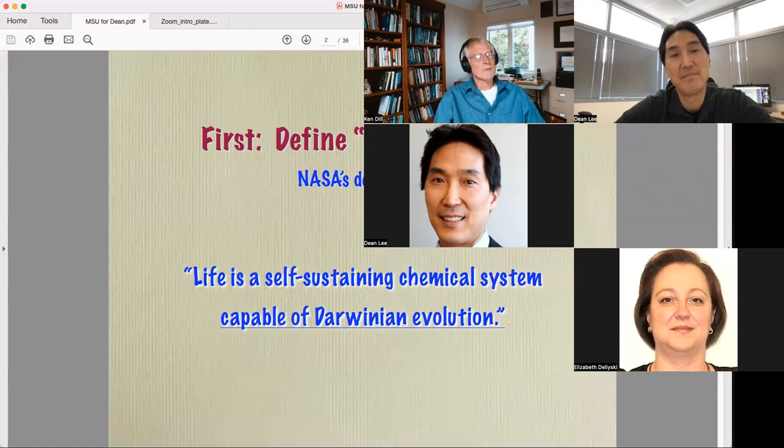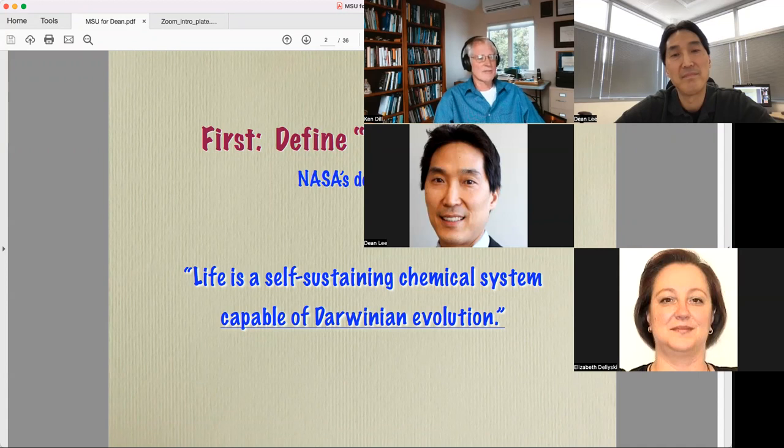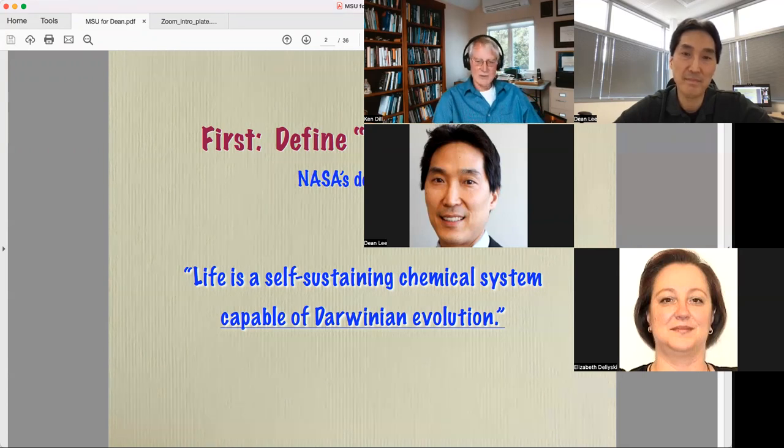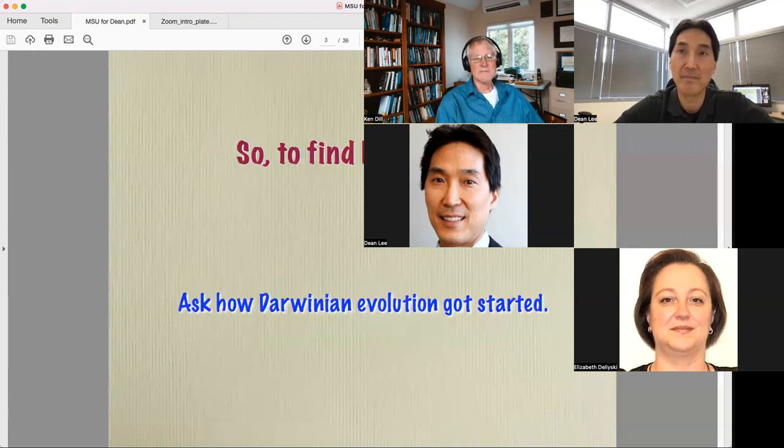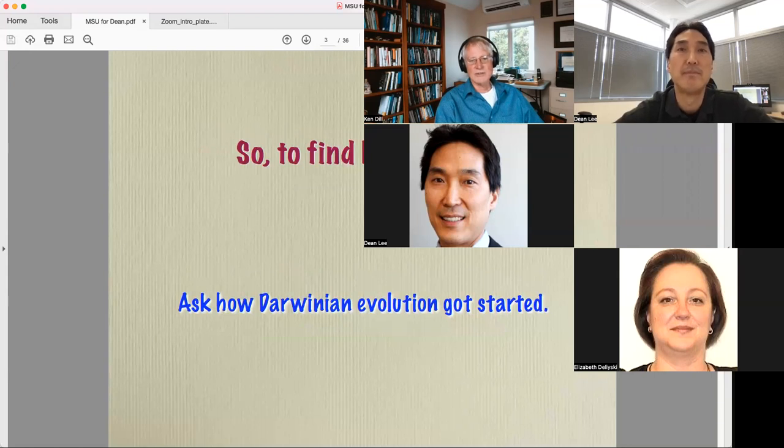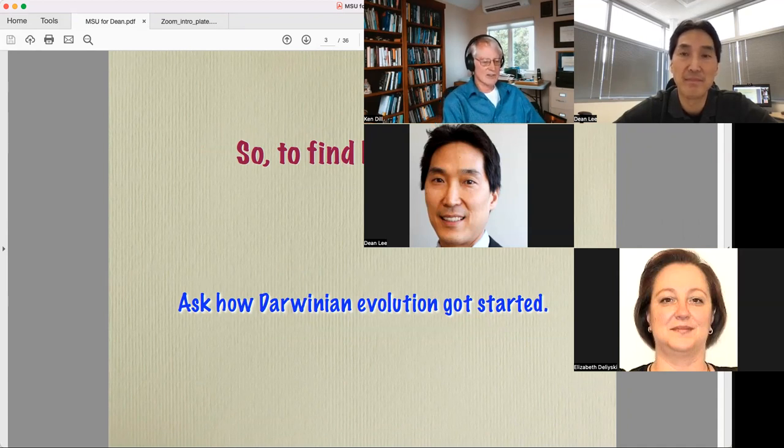But the second point is that this gives us some clues about how to think about the origins of life. This definition tells us that what we should be looking for is the dynamical propagation process itself. I need to be able to tell you something about how molecules came to propagate dynamically in Darwinian ways, adaptive ways, in autocatalytic ways, before I can tell you anything else about the forms of matter that it entailed. In short, to find the origin of life, what we have to do is ask first how Darwinian evolution got started in the first place, the propagation mechanism, the adaptation dynamics.